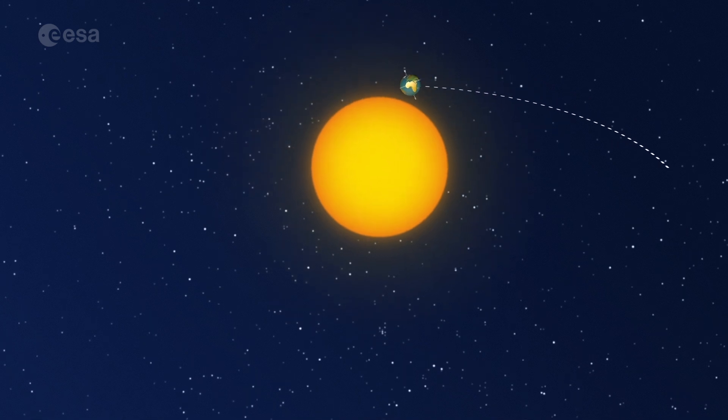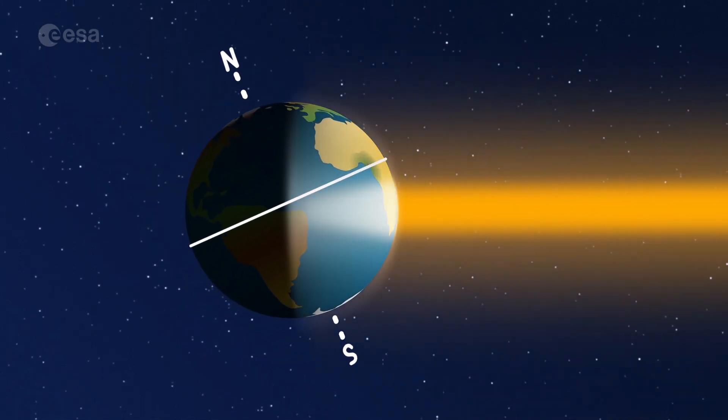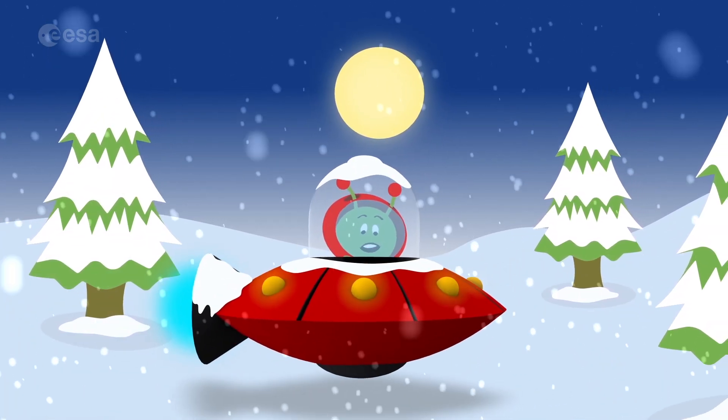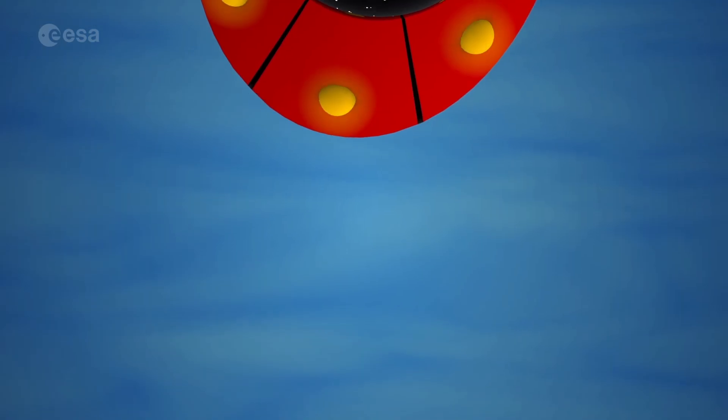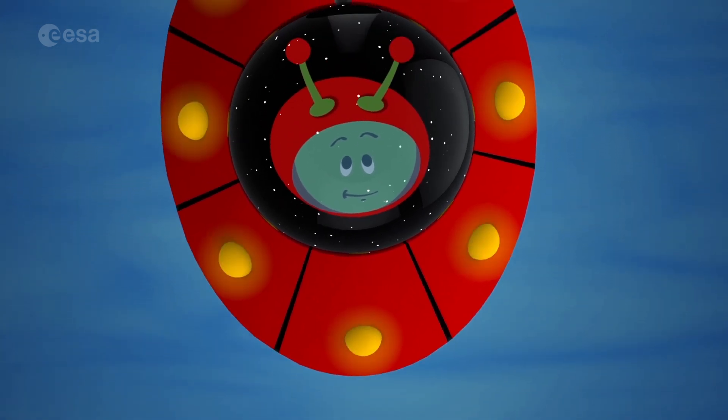When the northern hemisphere is tilted away from the sun, it's winter there. The sun appears to be lower in the sky, so we get less light and less warmth. Not so good for beach holidays, but good for stargazing.